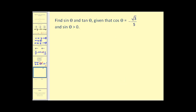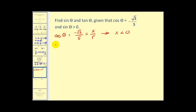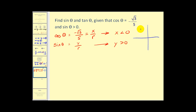Let's use these identities. Find sine theta and tan theta given that cosine theta equals negative square root of three over five, and sine theta is greater than zero. Since cosine equals x over r and r is always positive, x must be less than zero. Since sine theta equals y over r and sine theta is positive with r positive, y must be greater than zero. This places us in quadrant two, where x is negative and y is positive, which also means tangent theta will be negative.